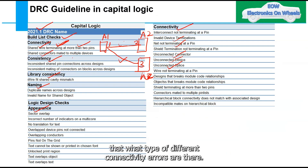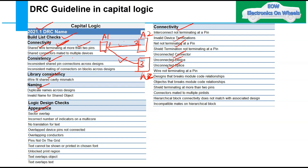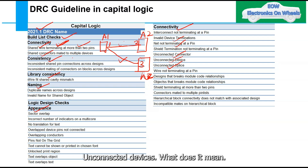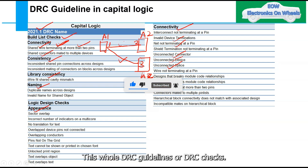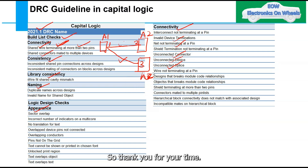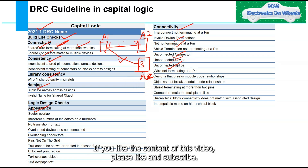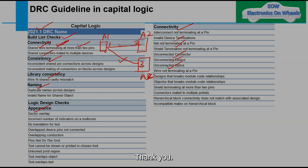In interviews, questions are frequently asked about DRC connectivity errors — such as unconnected connectors, unconnected devices, and wire not terminating at a pin. You can prepare by understanding the full DRC guidelines and checks. Thank you for watching — if you liked the content, please like and subscribe.